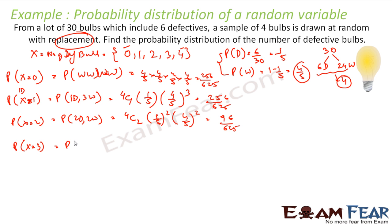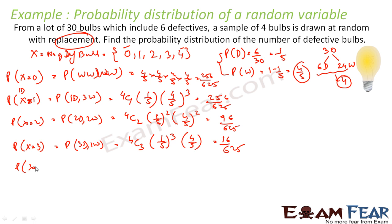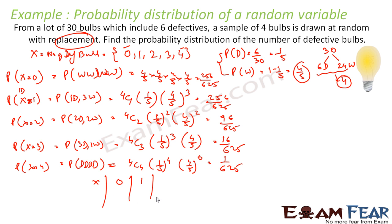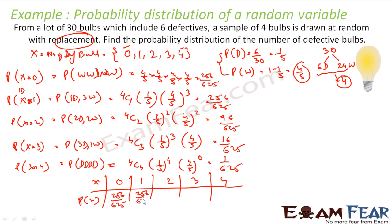Probability of X equal to 3 — that is 3 defective — is 4C3 times probability of 3 defective times 1 working, which is 16 by 625. And X equal to 4 — all defective — is 4C4 times 1 by 5 to the power 4, which is 1 by 625. So the probability distribution: X = 0, 1, 2, 3, 4 with probabilities 256/625, 256/625, 96/625, 16/625, and 1/625 respectively. And that is correct.